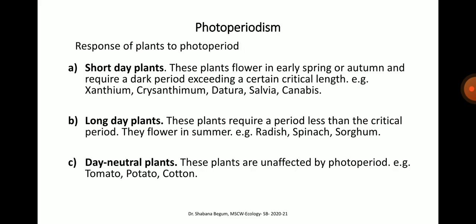Photoperiodism is the response of plants to day length. Based on photoperiodism, plants are divided into short day plants, long day plants and day neutral plants. Short day plants flower in early spring or autumn and require a dark period exceeding a certain critical length — examples include Xanthium, chrysanthemum, datura, salvia and cannabis. Long day plants require a dark period less than the critical period and flower in summer — examples include radish, spinach and sorghum. Day neutral plants are unaffected by photoperiod — examples include tomato, potato and cotton.